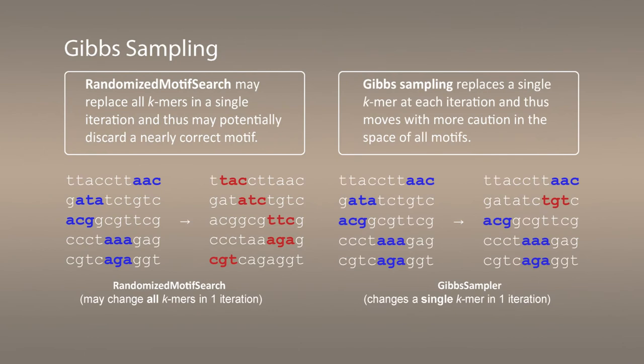The biggest difference is that randomized motif search is a rather reckless algorithm. It can actually change all found motifs at every iteration depending on what the profile most probable k-mers are. This allows it to move very quickly in the space of solutions, but there is a danger that you already came close to the correct motif and then jump away, because randomized motif search moves so quickly through the space of all possible motifs.